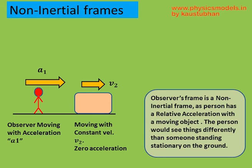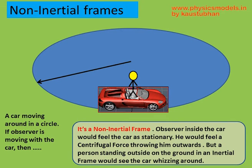If we look at an observer who is accelerating towards that box with a large acceleration A1, and the box is moving to the right with a uniform velocity V2, then from our point of view we see both objects moving from left to right with the observer getting closer to the box. From the observer's point of view, he or she will see the box coming towards them. That makes it a non-inertial frame of reference.